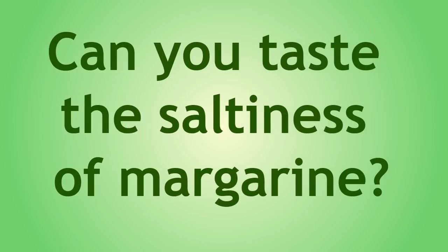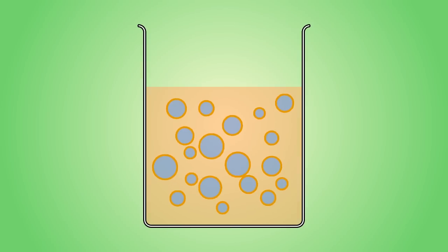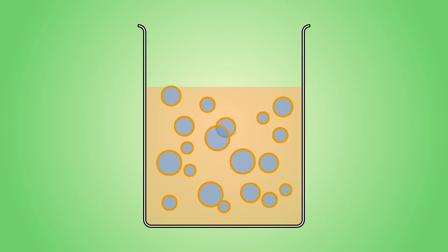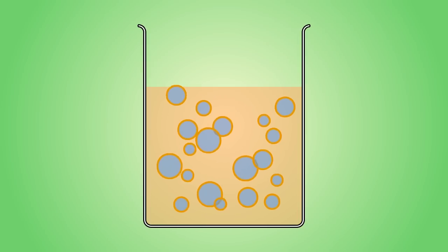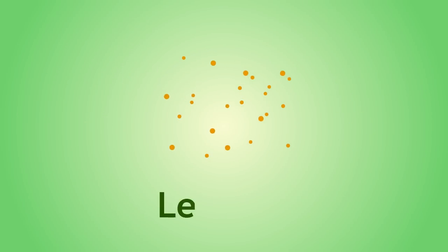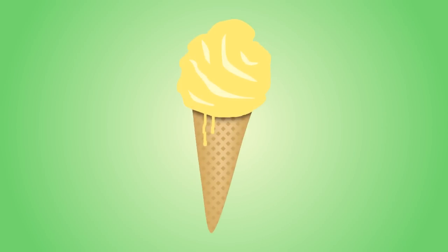Margarine is an emulsion of water droplets in oil. These water droplets are in fact salty water, which is why margarine usually has a salty taste. The salt content of margarine can be modified — we can have low sodium margarine, regular margarine, and even salt-free margarine. The emulsifier commonly added is lecithin, the same emulsifier used to stabilize ice cream.